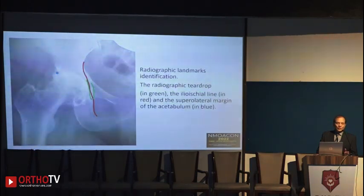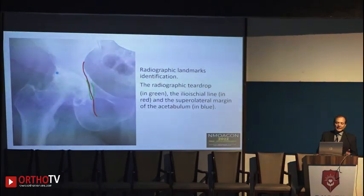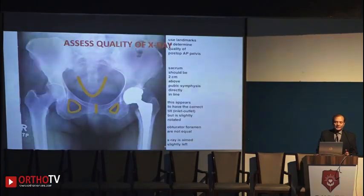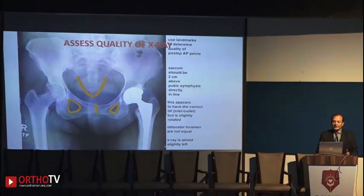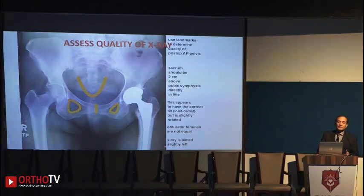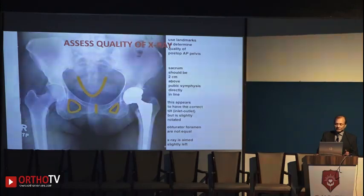We know the basic things already covered in the previous lecture — we have to see the teardrop, the ilioischial line, and the lateral wall of the acetabulum. The ideal antero-posterior view and what is to be seen have also been covered. For example, the obturator foramen may appear narrow on one side, which could be due to a flexion deformity at the hip on that side, and this can gradually correct.